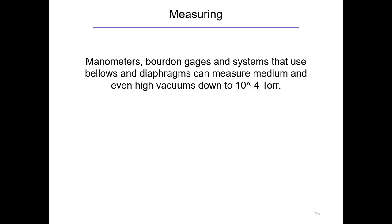Now we're going to move on to measuring vacuum. Many devices we've already discussed — manometers, Bourdon gauges, and systems using bellows and diaphragms — can measure medium and even high vacuums down to about 10⁻⁴ torr. But we're going to focus on devices specifically meant for vacuums and that can reach into the higher vacuum range — meaning lower pressure.